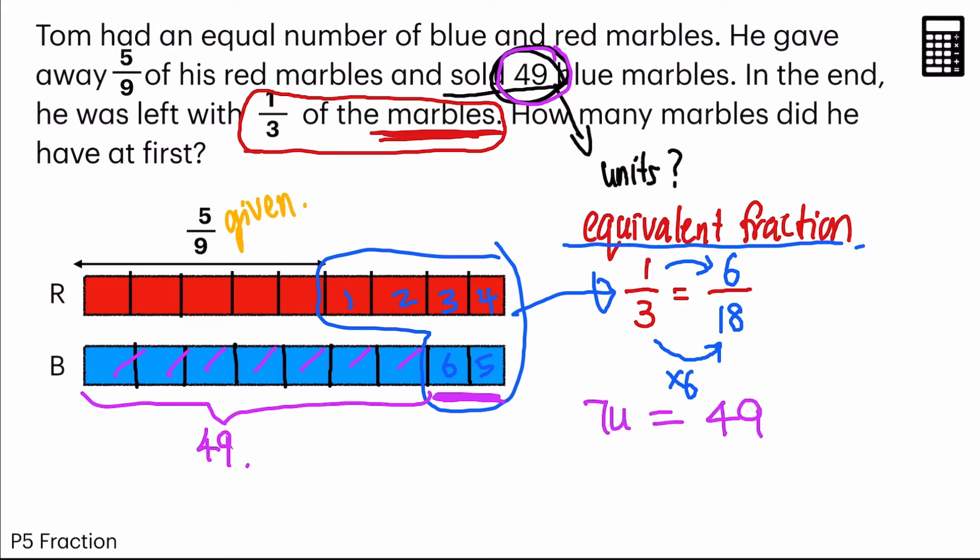They want to know how many marbles did he have at first. Which means we are finding 18 units. So first of all, let us find 1 unit. 1 unit is equal to 49 divided by 7 equals to 7.